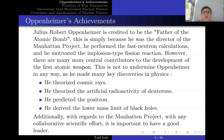Oppenheimer has made many quintessential discoveries in physics. He theorized cosmic rays, theorized the artificial radioactivity of deuterons, predicted the positron after Dirac wrote down his Dirac equation, and derived the lower mass limit of black holes, which I talked about in the previous video. With regards to the Manhattan Project, any scientific collaboration with many people requires a good leader, and Oppenheimer's achievements are definitely amazing and his recognition is well-deserved.